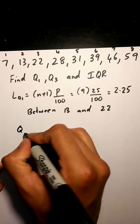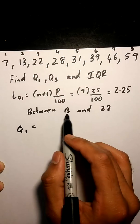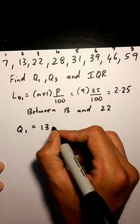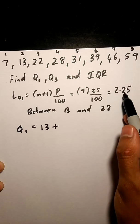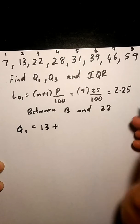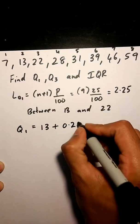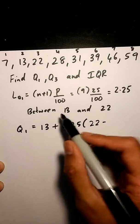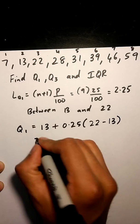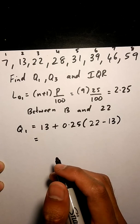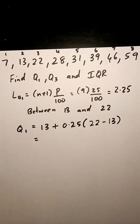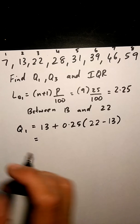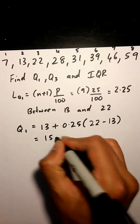So Q1 calculation, it's basically the lower number 13, plus whatever the decimal value of our indexes, so 0.25, times the higher number minus the lower number, which is going to give us 15.25.